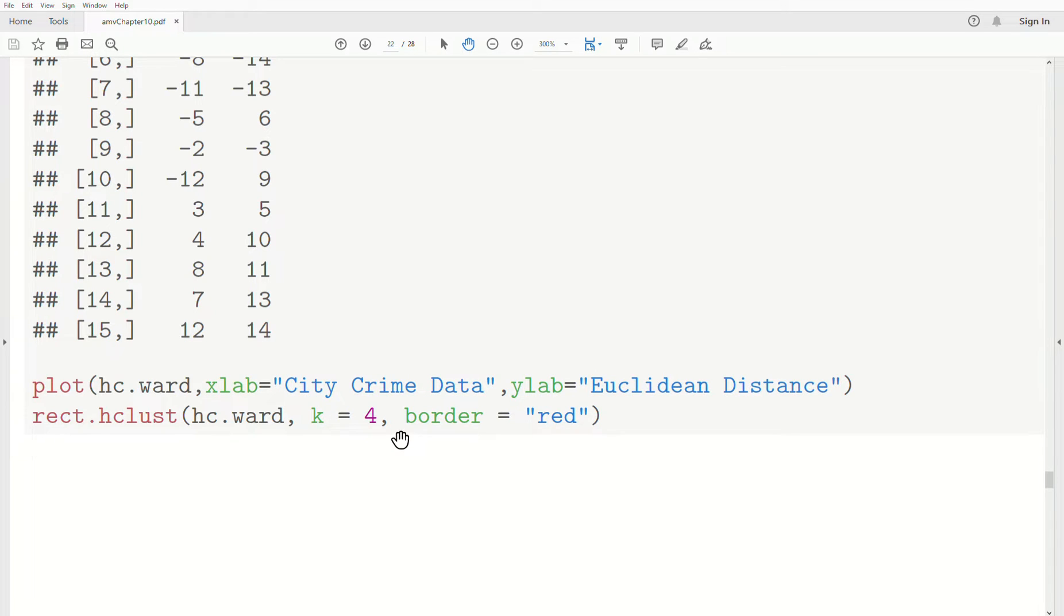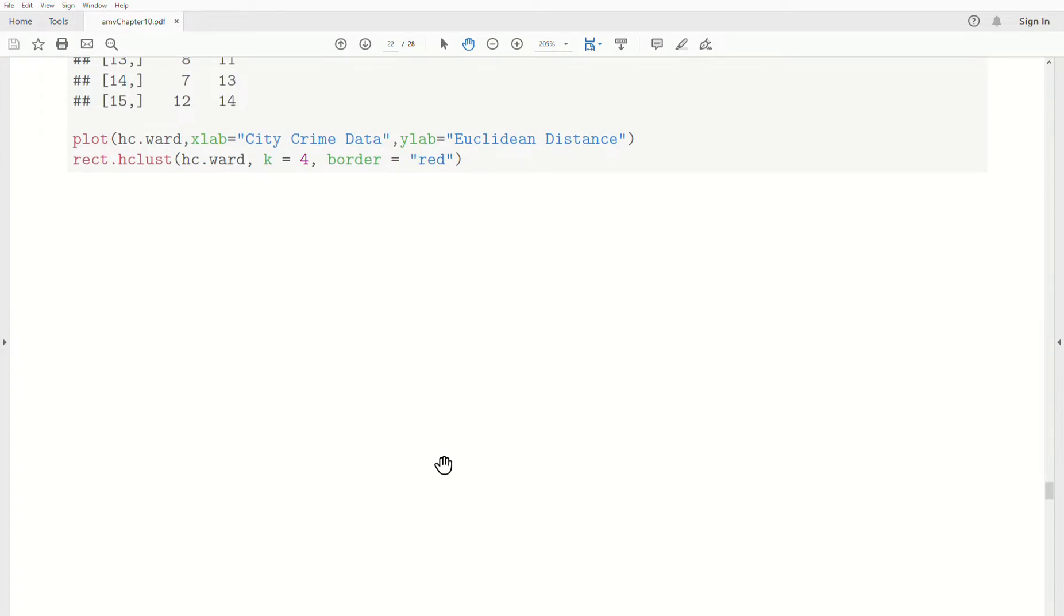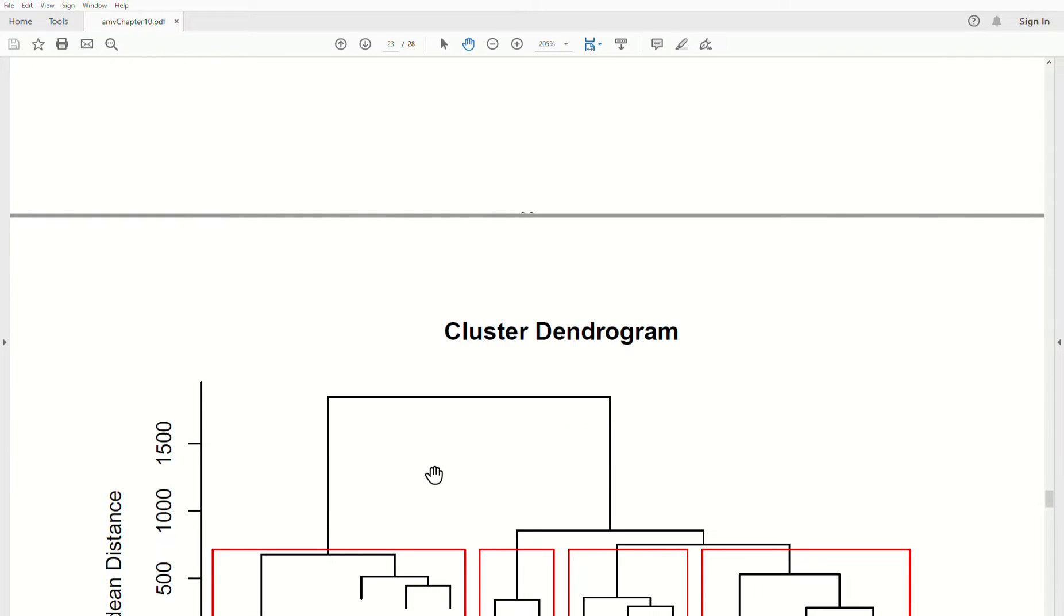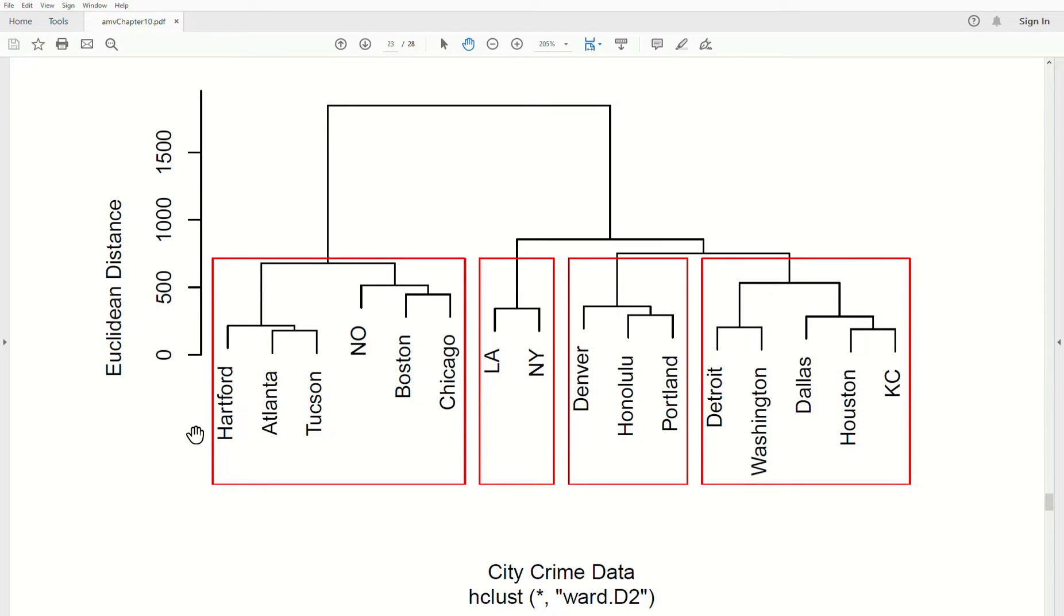So I put K equals four, so I want to highlight four clusters. And here is the plot, the dendrogram using hierarchical clustering using Ward's method.